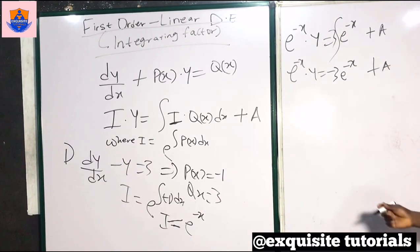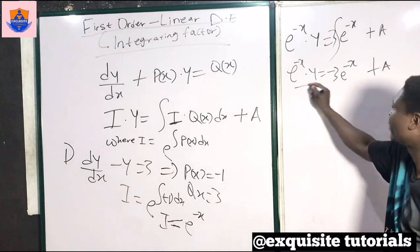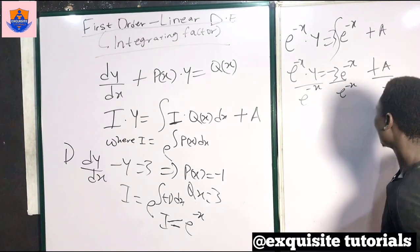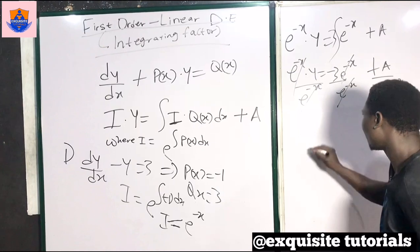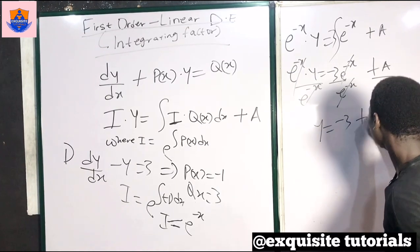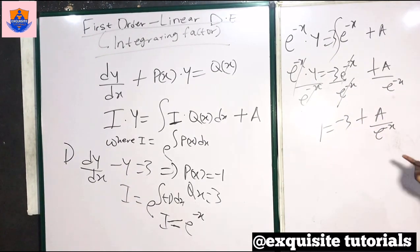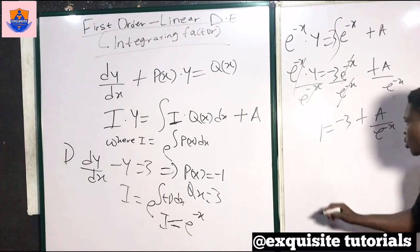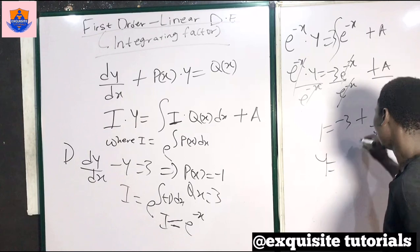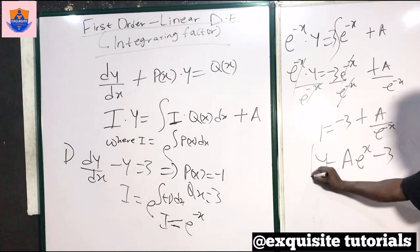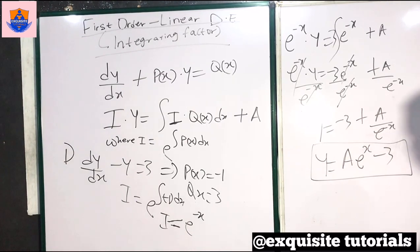Now what can I do here? I can divide through by e^(−x). When I divide through, this cancels with this and I have y equals minus 3 plus a over e^(−x). In indices, when I have a negative power in the denominator, I can bring it upward to make it positive. So I get y equals a·e^x minus 3. The minus sign is absorbed. This is the general solution of this differential equation.